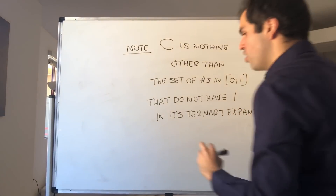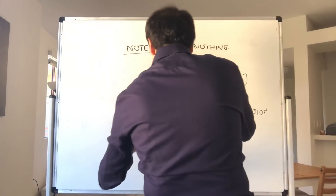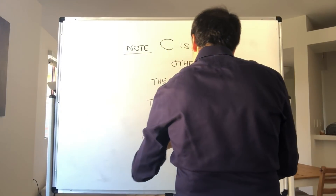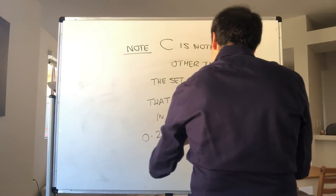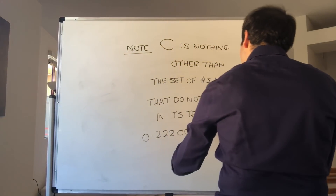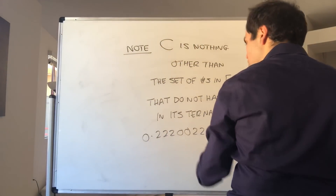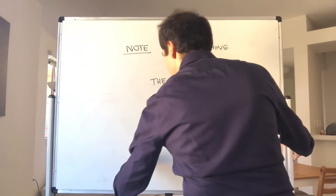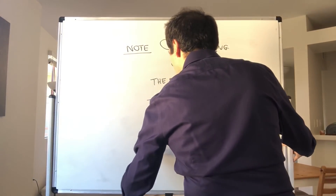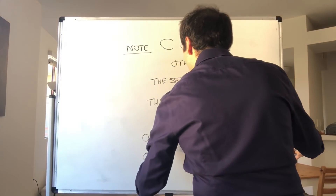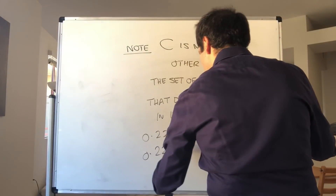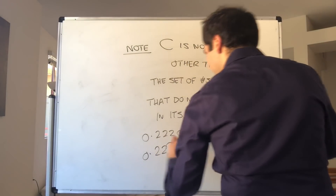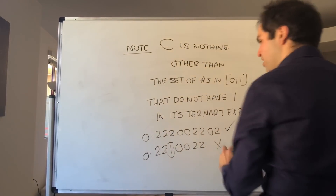For instance, the number 0.220022020 is fine — that's in the Cantor set. But the number 0.221002 is not in the Cantor set because it contains a 1 in the ternary expansion. So you're just considering numbers without 1 in the ternary expansion.